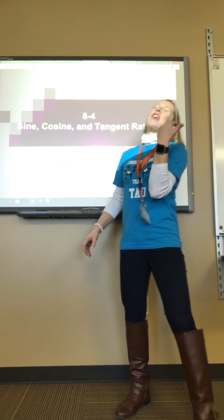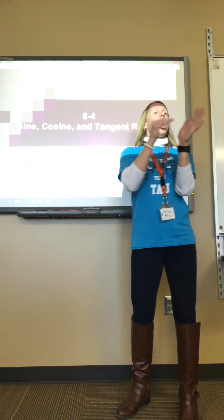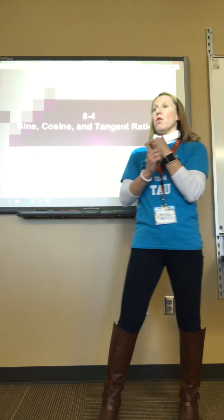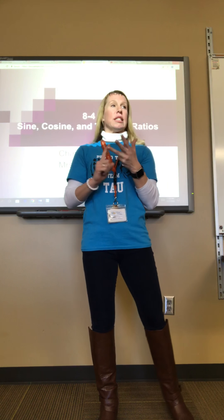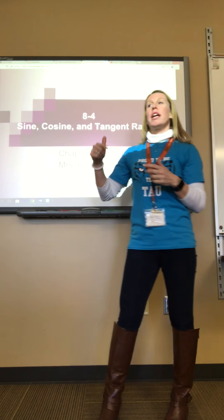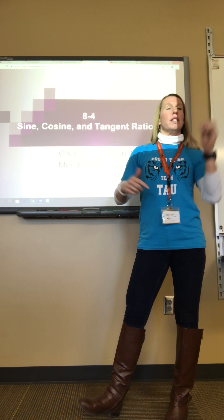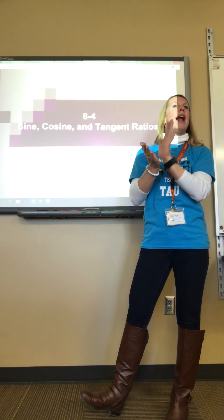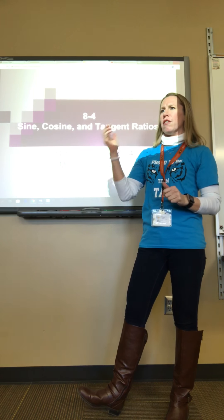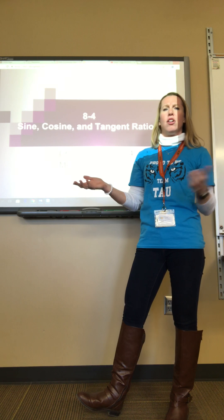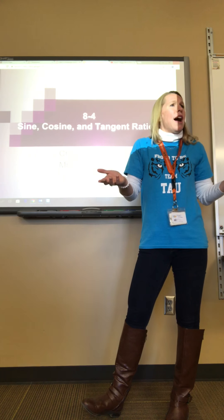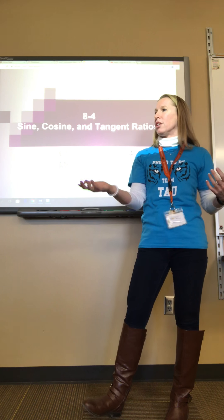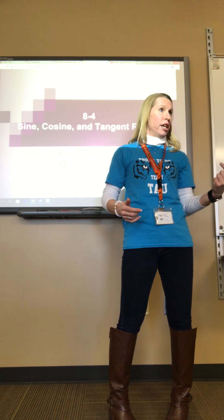We've already learned about special right triangles — 45-45-90 and 30-60-90 triangles. Trigonometry is used when it's not a special triangle or not a special angle like a 30-degree or 45-degree angle. You can have triangles with 32-degree measures or 28-degree measures, and that's when trigonometry comes in.